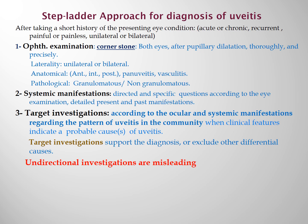Diagnosis of uveitis requires a step-ladder approach. After a short history — onset and duration, acute, chronic or recurrent, unilateral or bilateral, painful or painless — we start with the first step: ocular examination, which is the cornerstone of diagnosis. We examine both eyes after pupillary dilatation, examining anterior and posterior segments to detect laterality, anatomical type (anterior, intermediate, posterior or pan-uveitis), and pathological type (granulomatous or non-granulomatous).